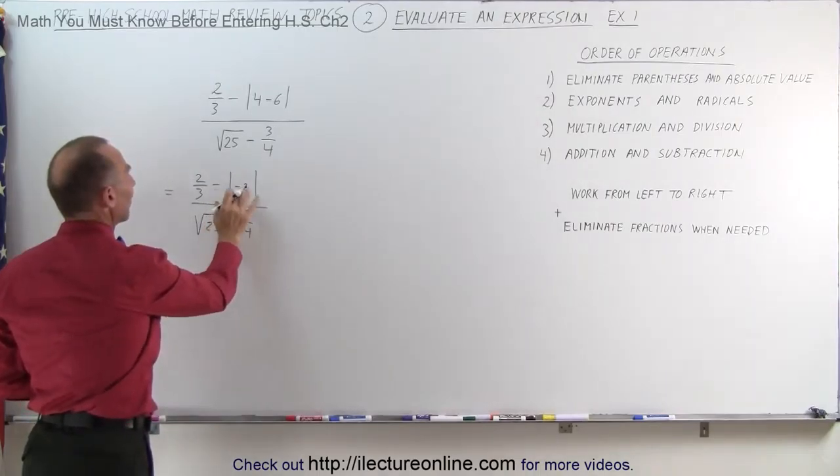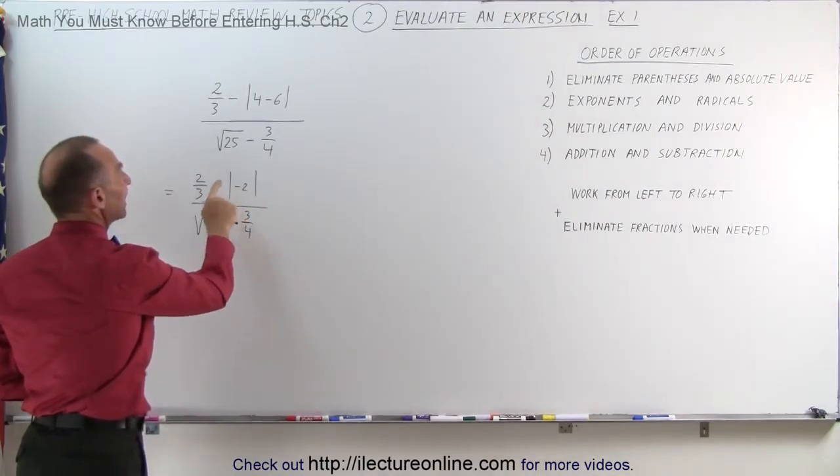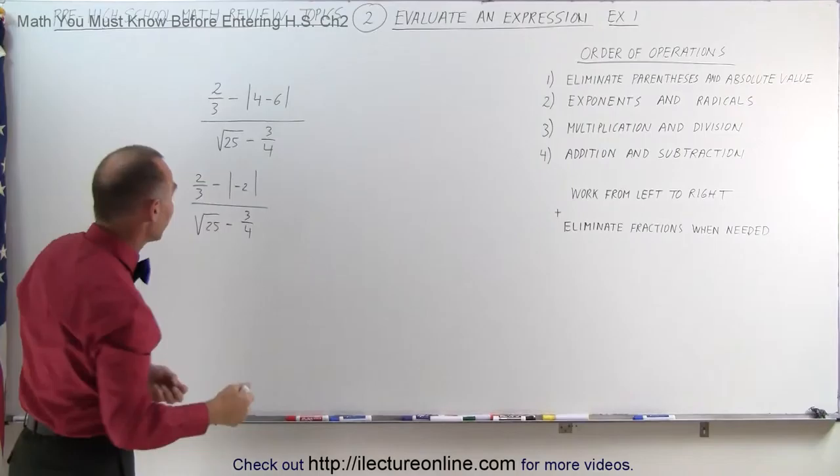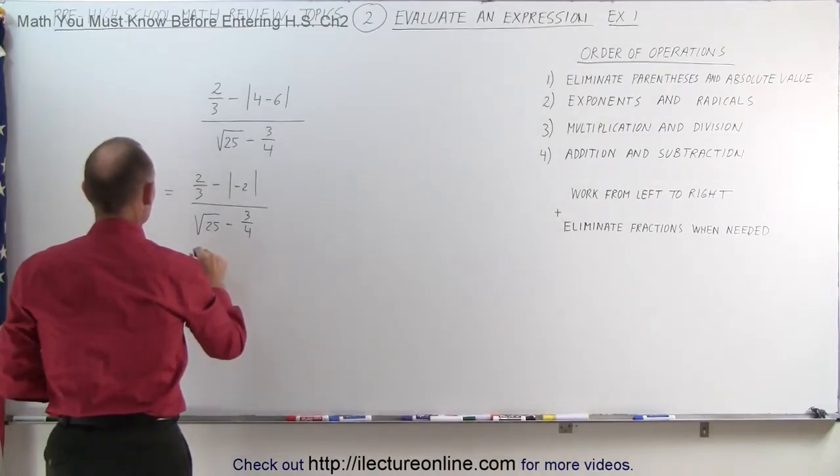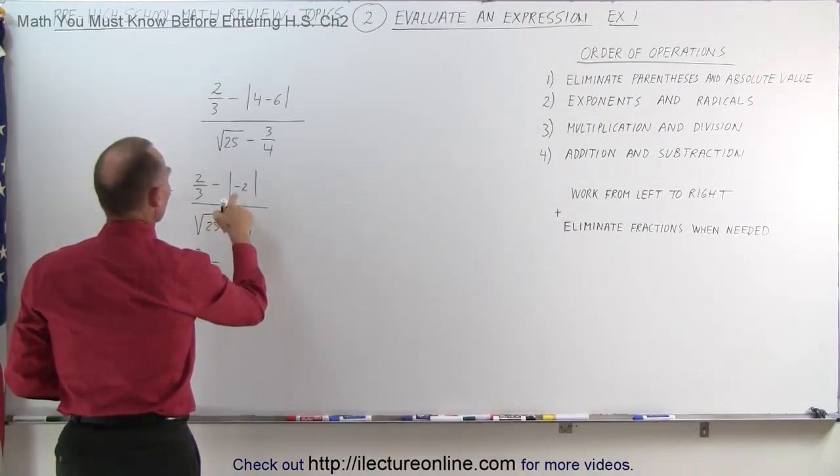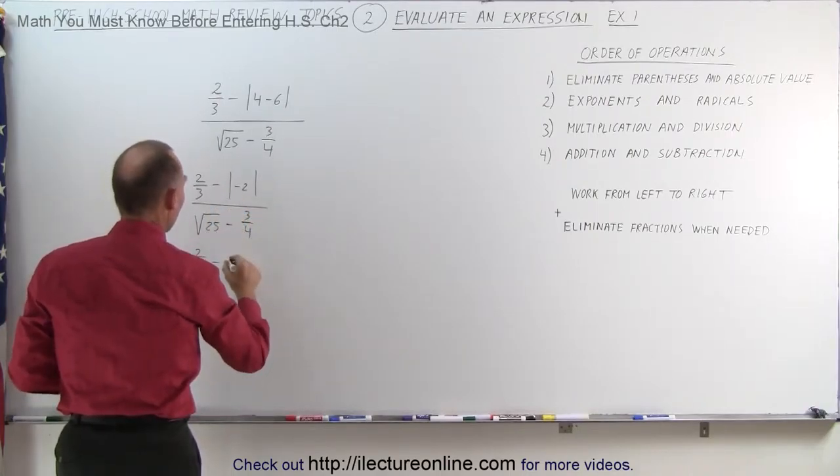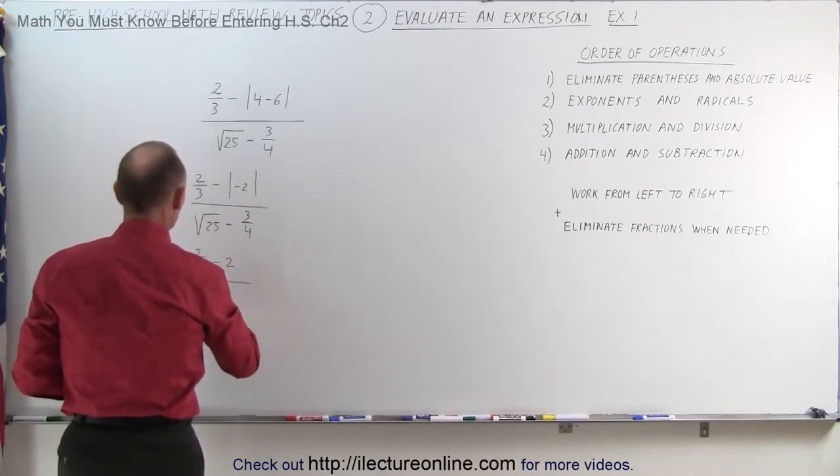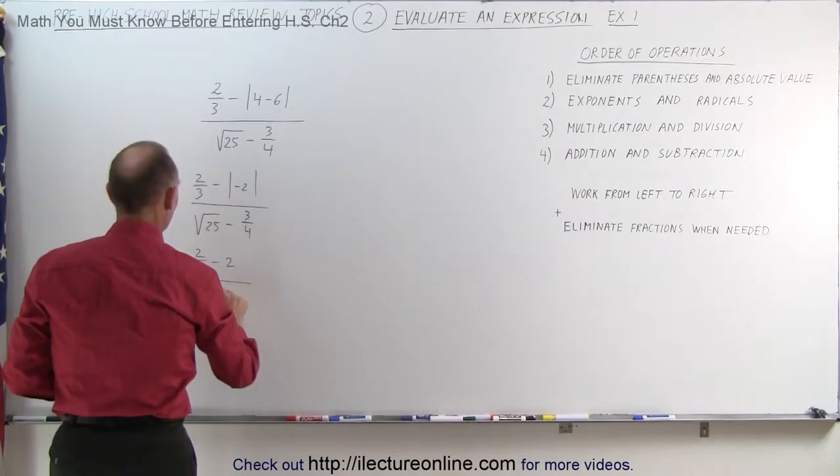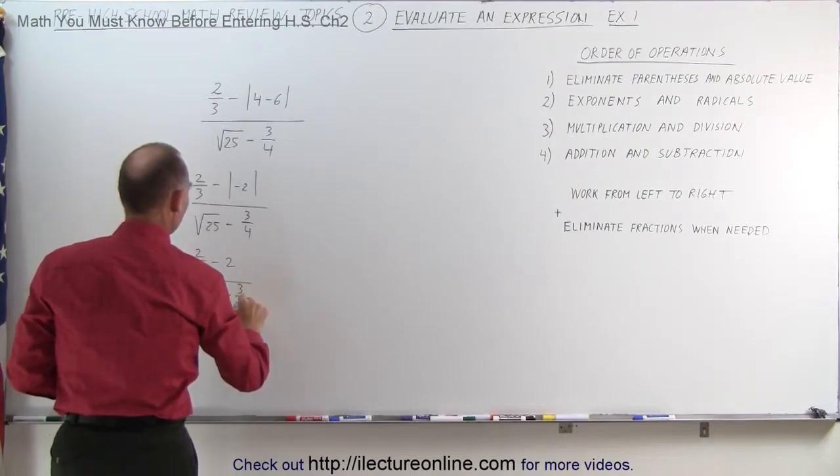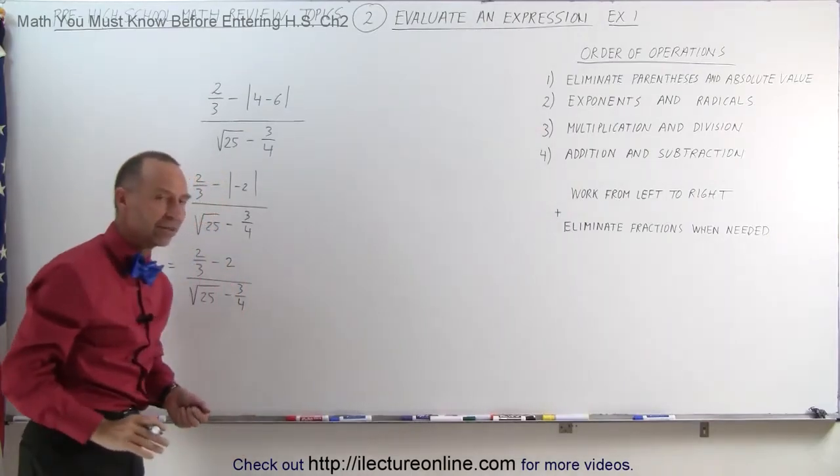We still need to get rid of the absolute value symbol. So when we take the absolute value of a negative number, that becomes a positive number. So this becomes equal to 2/3 minus the absolute value of minus 2 becomes a positive 2, divided by the square root of 25 minus 3/4. So now we got rid of that absolute value sign.